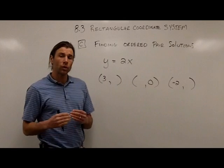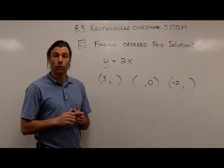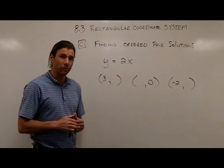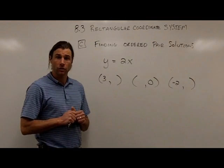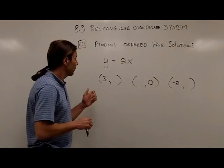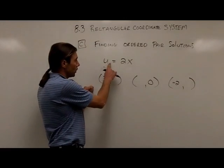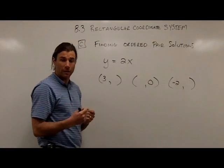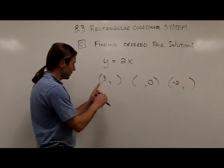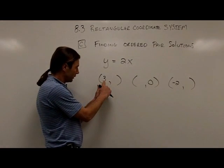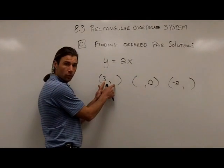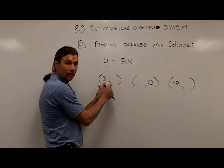In part C, we're going to go one step further. Instead of just identifying whether an ordered pair is a solution, we're actually going to be finding some ordered pairs that are solutions to an equation. So in here, an example, I have the equation y equals 2x. Again, I have two types of variables, both a y and an x. And notice down here, I have one of the numbers for my ordered pair. And I'm going to need to find the other number.